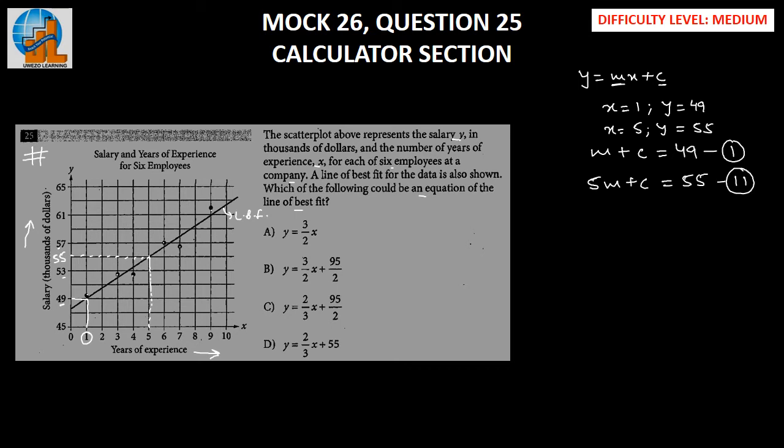Let us subtract these two equations, which will help us to eliminate C. So we can cancel out C here. This will be minus 4M equals minus 6. We can cancel out the negative signs, which implies M has to be 3 by 2.